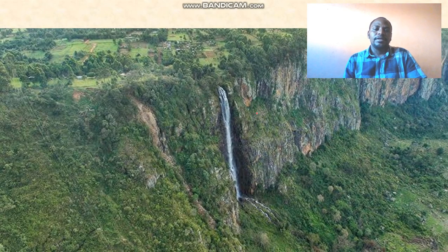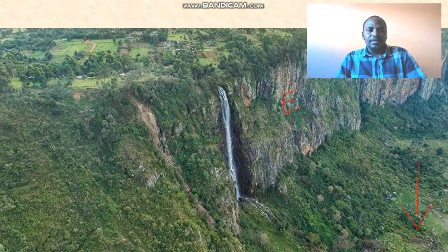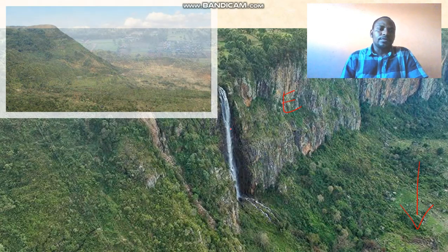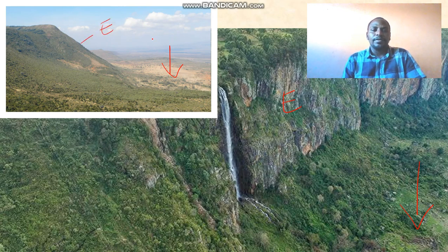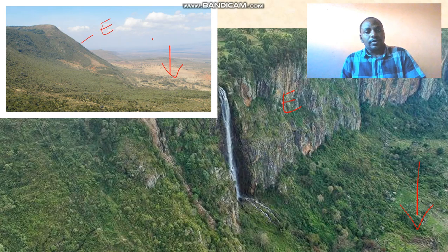Now in reality, this is the Kenya Rift Valley. You can see there's an escarpment there. This is the floor of our rift valley. It is part of the Great Rift Valley, the Kenyan section. This is a broad view of the rift valley and we have the escarpment on that side.